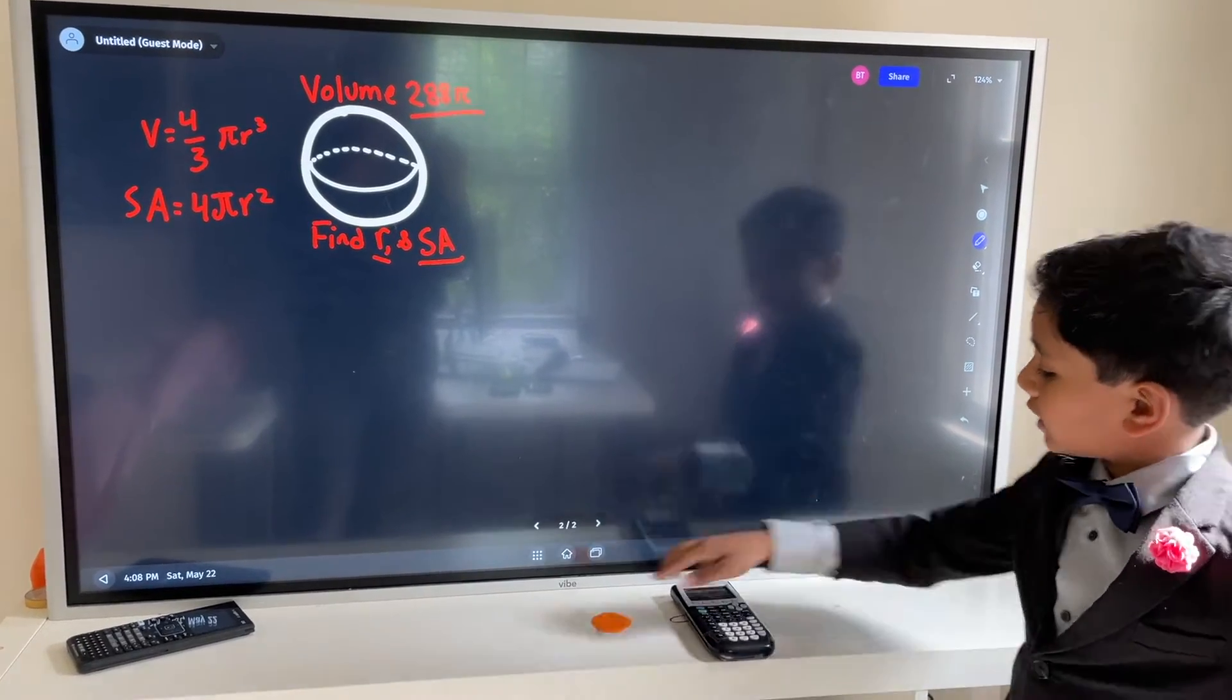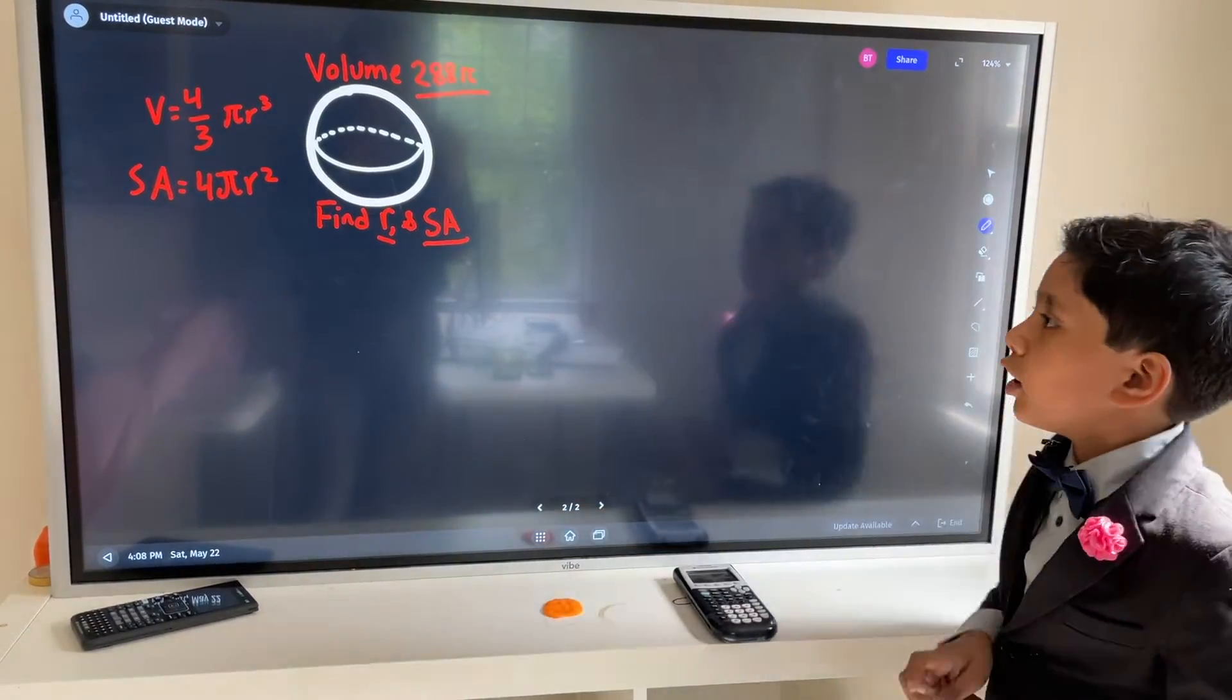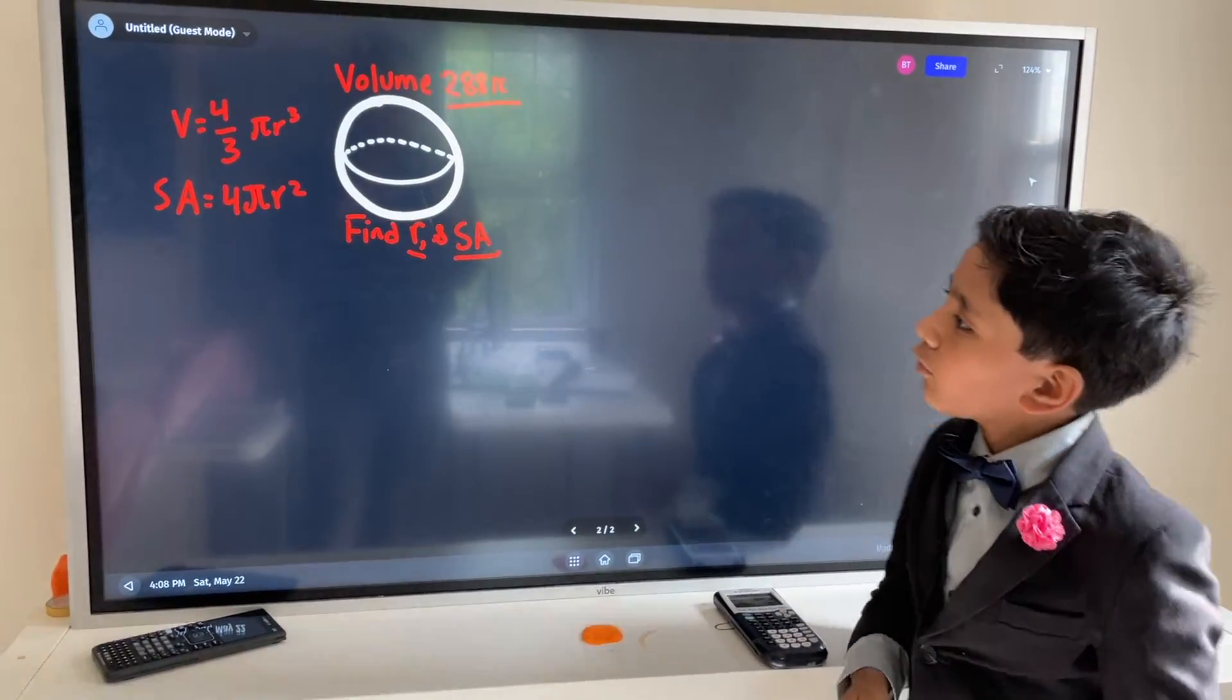And by the way, the radius would just be the radius of this circle. Alright, so now let's see what we can do over here.